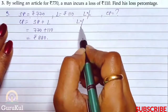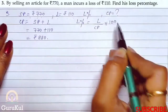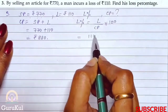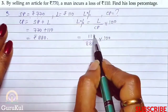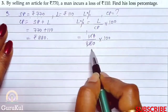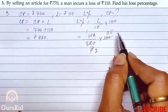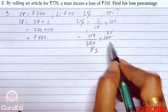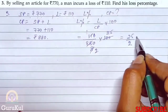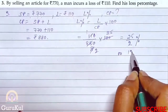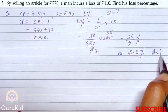Now we need to find the loss percent. Loss percentage = loss divided by CP, into 100. That is: 110 divided by 880, into 100. After cancelling zeros and simplifying — 11 eights are 88 and simplifying further — that gives us 25 by 2 percent, or 12.5%. So this is the answer for question number 3.